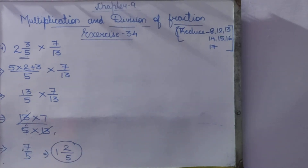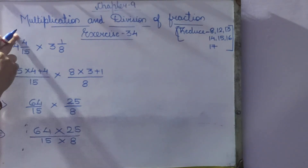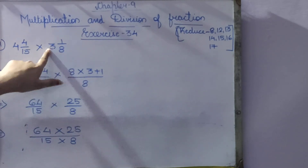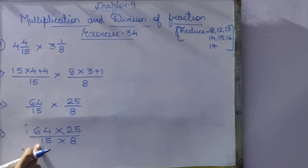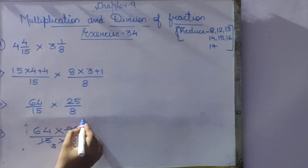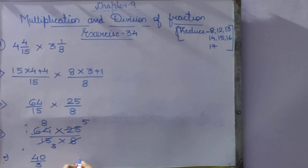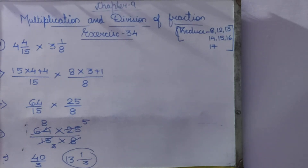Question 9: 4 4/15 × 3⅛. Convert both: 15 × 4 + 4 = 64, giving 64/15; and 8 × 3 + 1 = 25, giving 25/8. Now 64/15 × 25/8: simplify 5 and 15 (÷5) and 8 and 64 (÷8), giving 8 × 5 = 40 divided by 3. Since numerator is greater: 3 thirteens are 39 plus 1, answer is 13⅓. Questions 10 is in notes; 11 is homework; 12–17 are cut; 18 is homework.